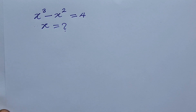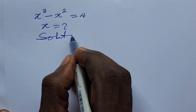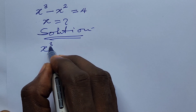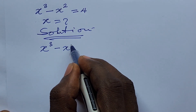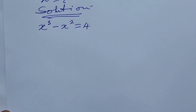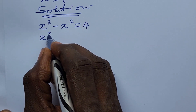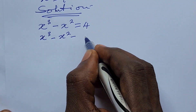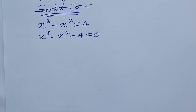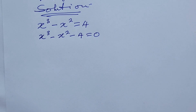So apart from 2, what are the other two solutions to this expression? Here we're going to walk you through a step-by-step guide on how to solve for all three roots to this equation. The question again: we have x to the power of 3 minus x to the power of 2 equals 4. The first thing we do is send this 4 to the left side of the equation, so we have x to the power of 3 minus x to the power of 2 minus 4 equal to 0.